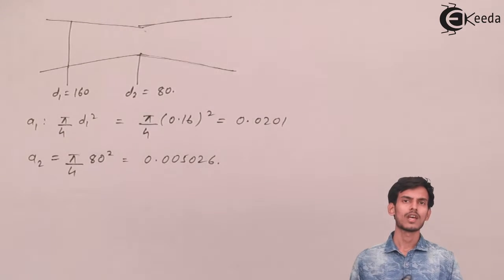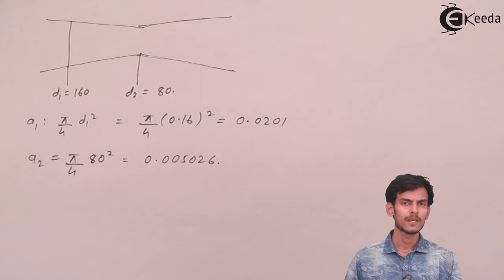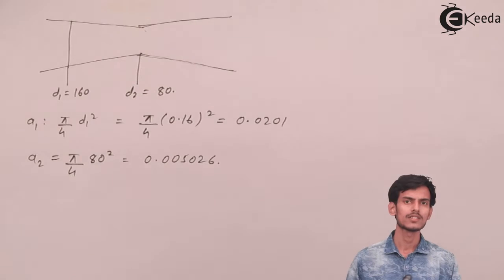As you all know, for calculating the discharge, you should know the areas of both the ends at the inlet and at the throat end. So we have calculated the area. Now let's use the formula that we have already seen before in the theory part and calculate the value of H.